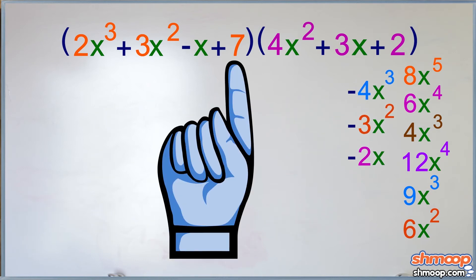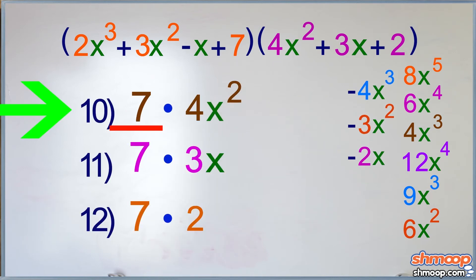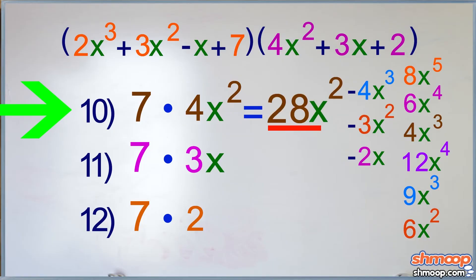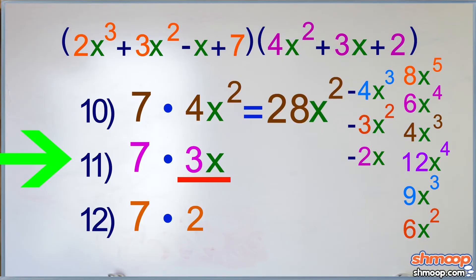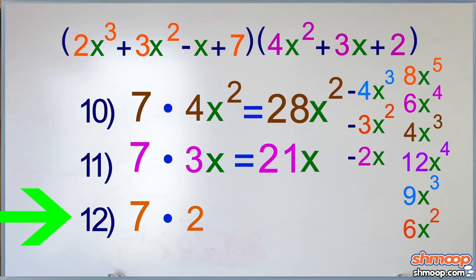Okay, last one. 7 times 4x squared is 28x squared. 7 times 3x is 21x. And 7 times 2 is 14.